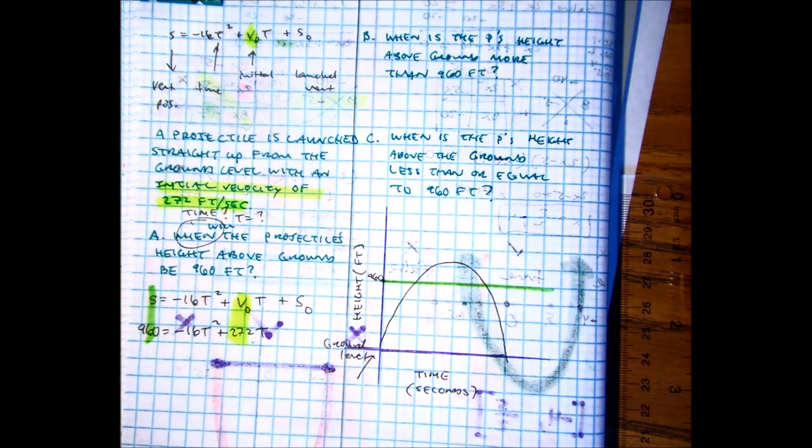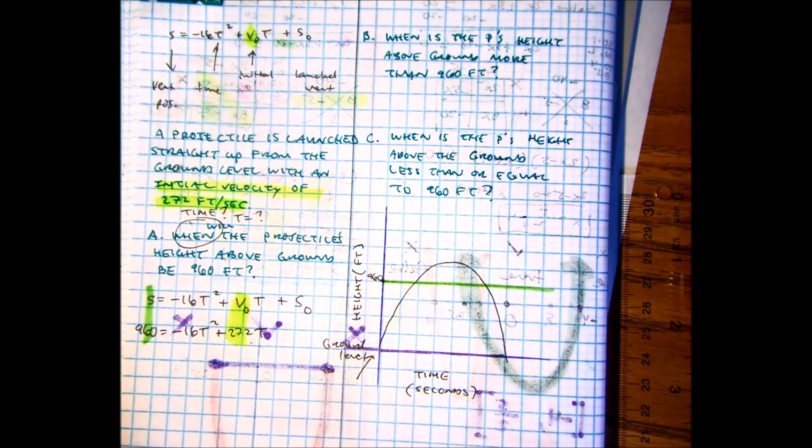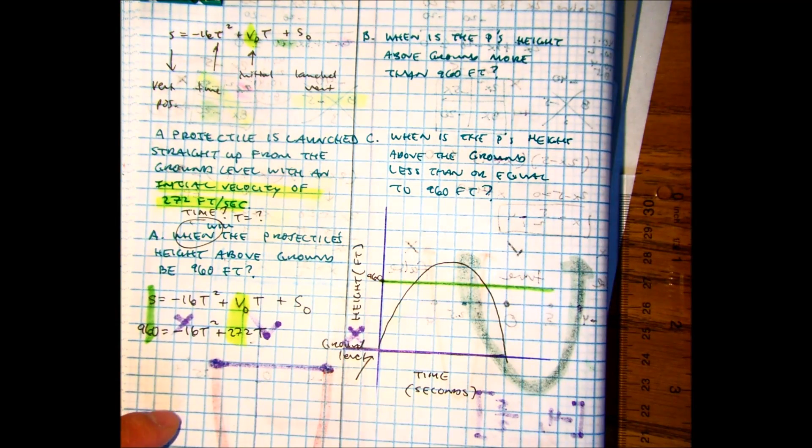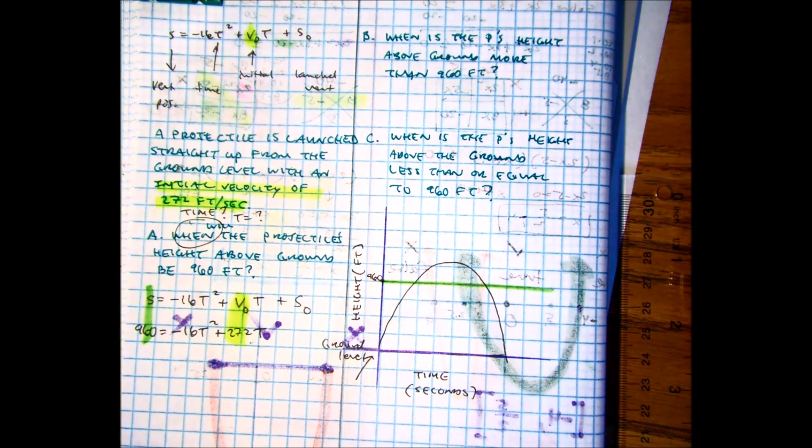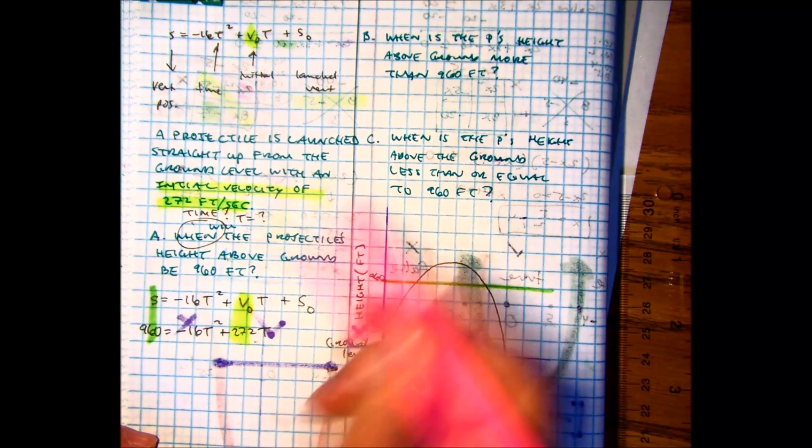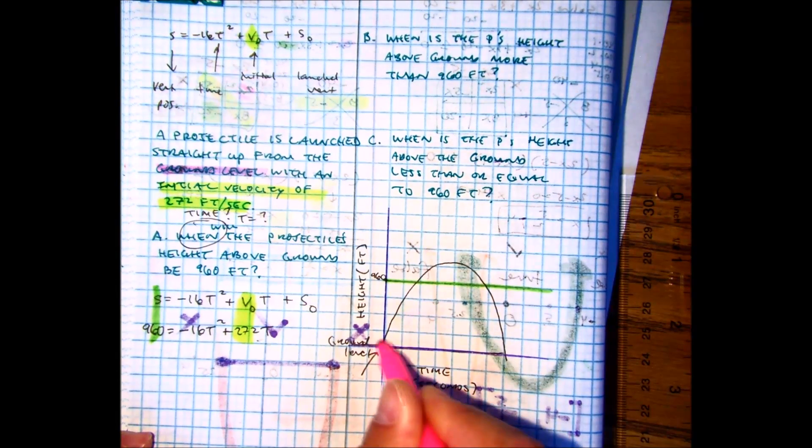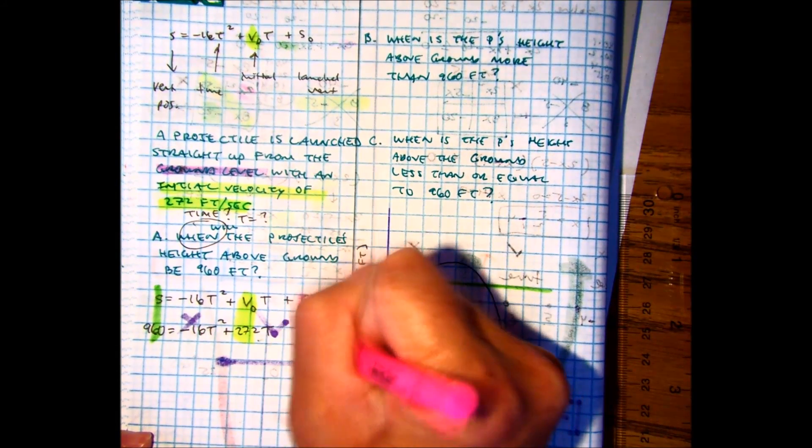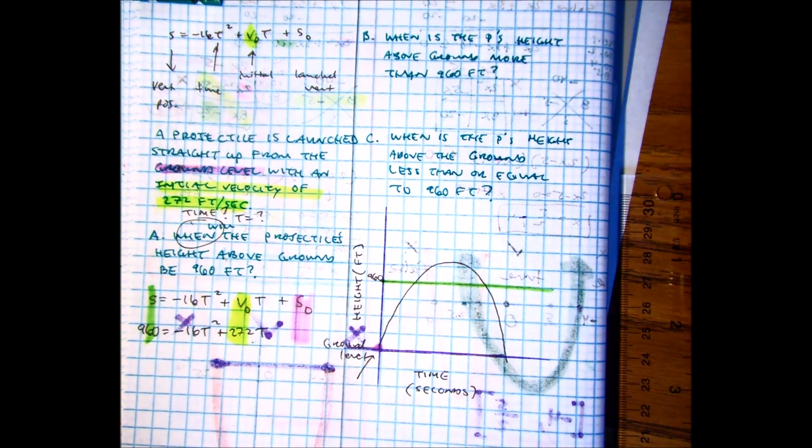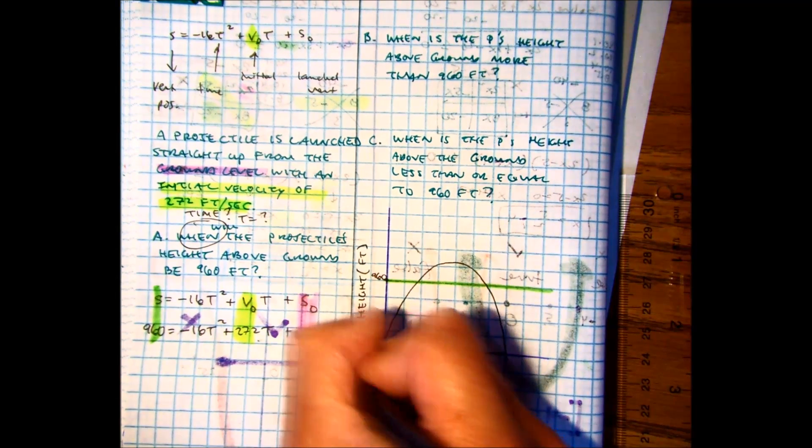Well, think about it. Where did you throw? Well, you started from ground level. You started here. So if you're at ground level, you're at zero feet. So this would be plus zero.